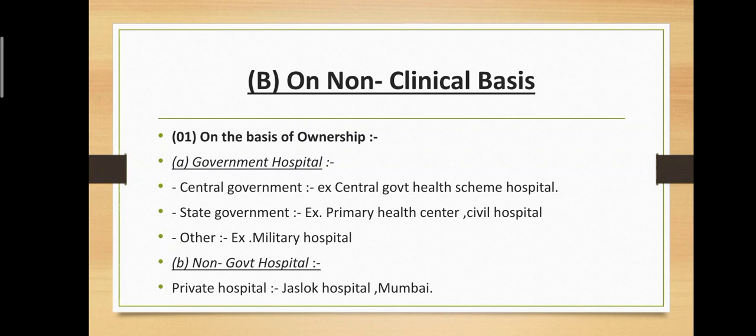Government hospitals are further divided into three types: central government — example: Central Government Health Scheme hospital; state government — example: Primary Health Center or Civil Hospital; and under the government — example: military hospital. The second subtype under ownership is non-government hospital — example: private hospitals such as Jaslok Hospital, Mumbai.